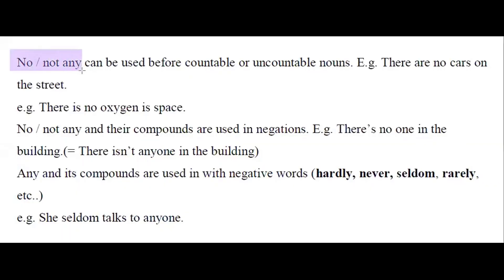'No', 'not', or 'any' can be used before countable or uncountable nouns. You can say 'There are no cars on the street' or 'There is no oxygen in this space.' 'No', 'not', or 'any' and their compounds are used in negations — for example, 'There is no one in the building', which means 'there is not anyone in the building.' 'Any' and its compounds are also used with negative words like hardly, never, seldom, rarely — for example, 'She seldom talks to anyone.'